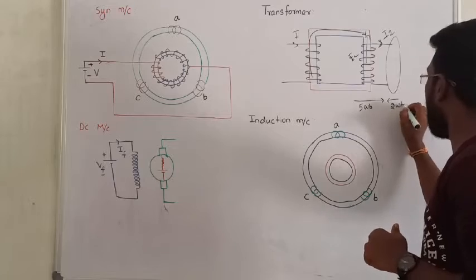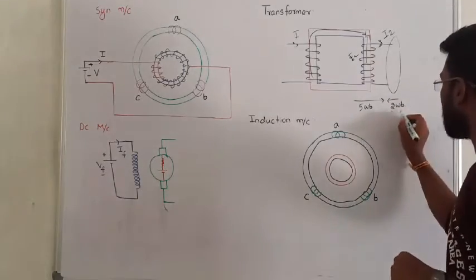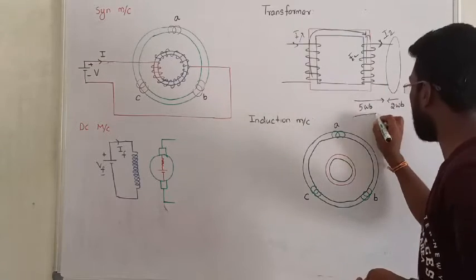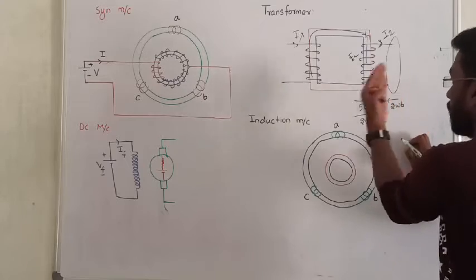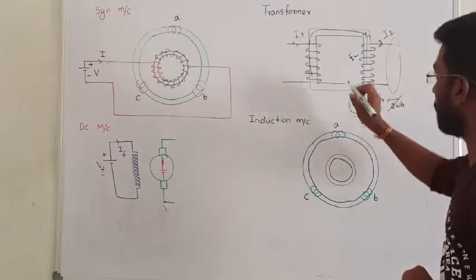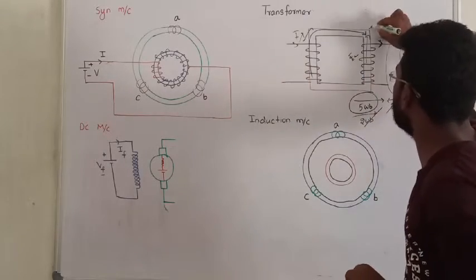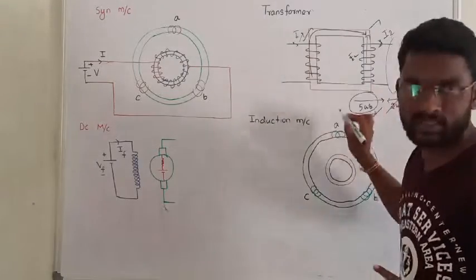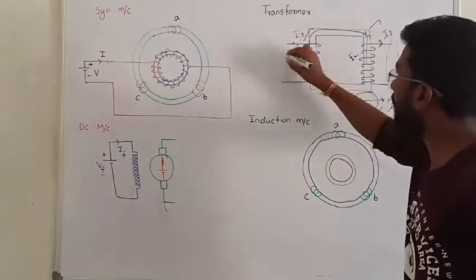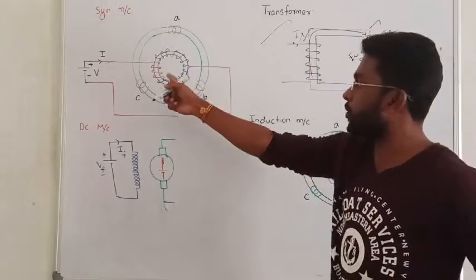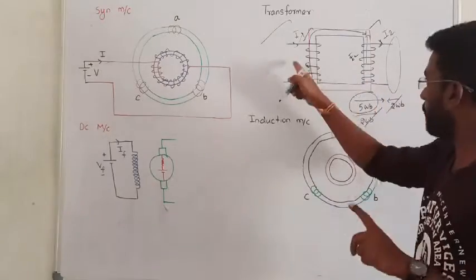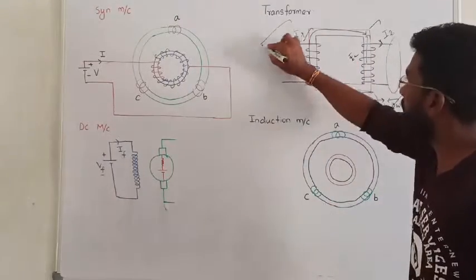The load is producing another flux in the opposite direction to the transformer flux — they are opposing each other. After that, the secondary flux cancels, additional flux cancels on the primary side current increases, and the primary flux on the primary side compensates. The result is the transformer flux remains constant. So there is a mutual interaction between primary and secondary. There are no separate windings — we have only one flux. So the transformer is called a singly excited machine.